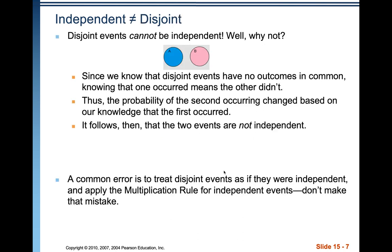People get independent and disjoint confused all the time. Disjoint events cannot be independent — if I know event A occurs, the probability that event B occurs goes all the way down to zero. So independent events cannot be disjoint. A common error is to treat disjoint events as though they were independent and apply the multiplication rule for independent events. Don't make that mistake.